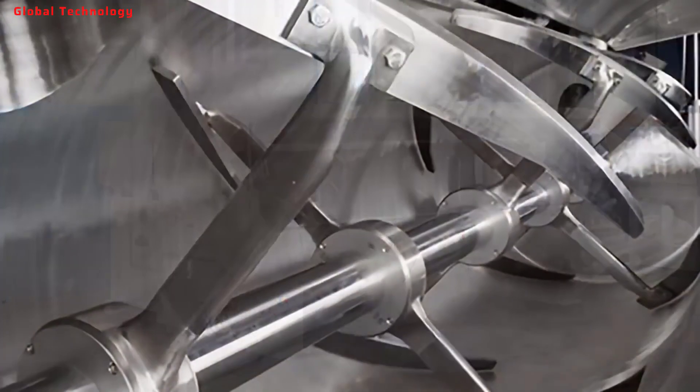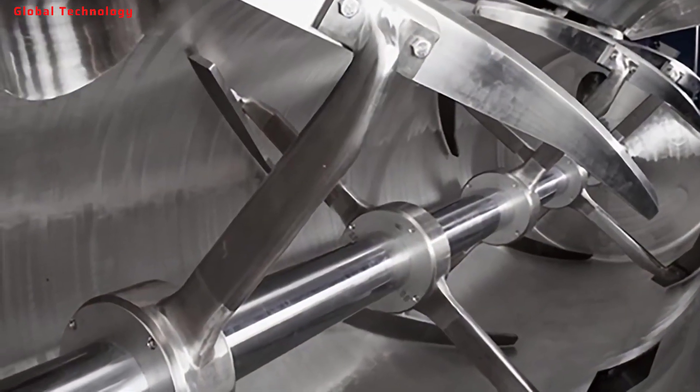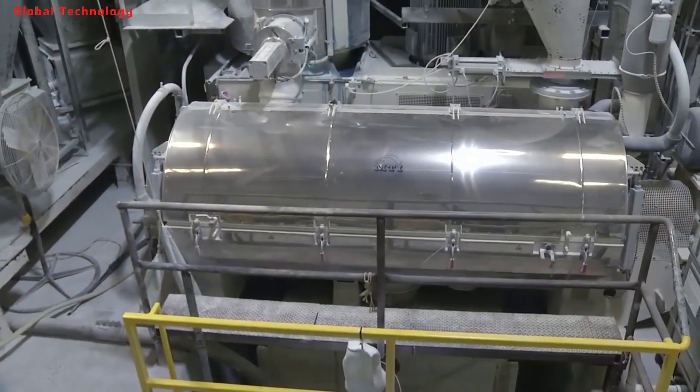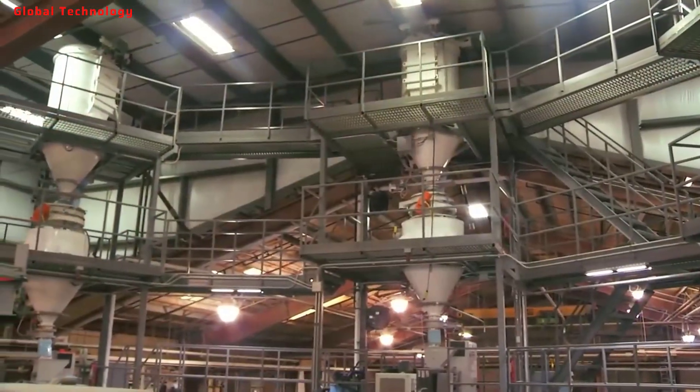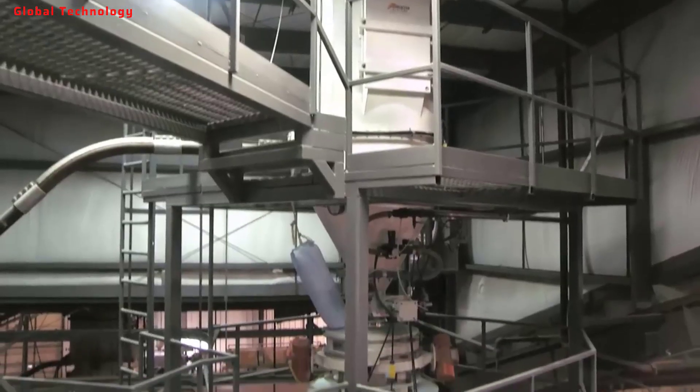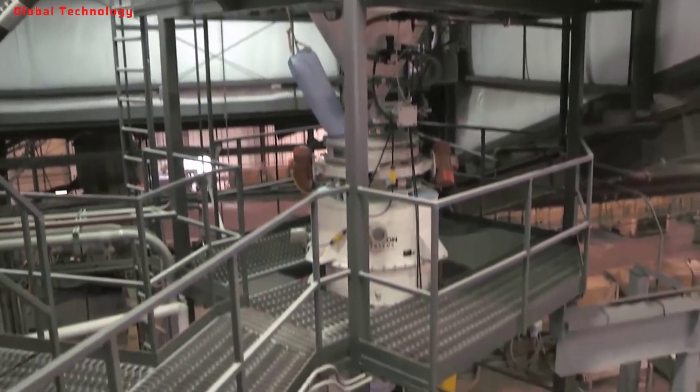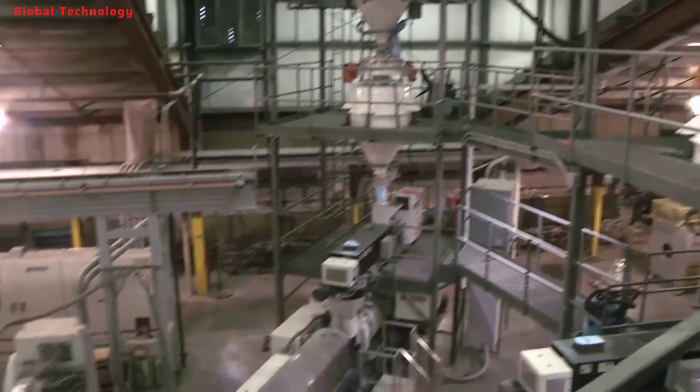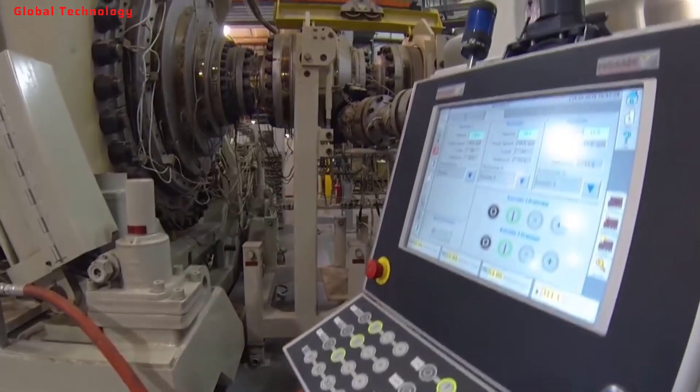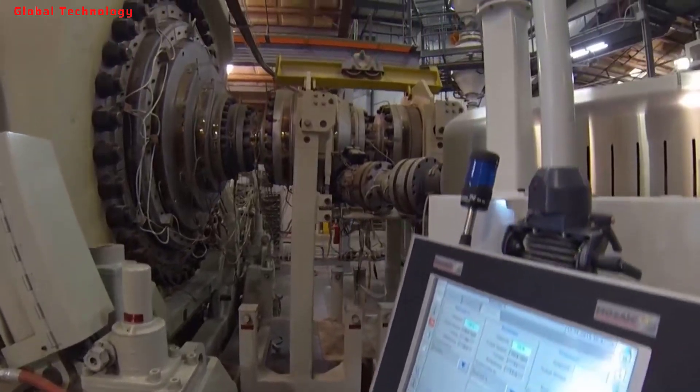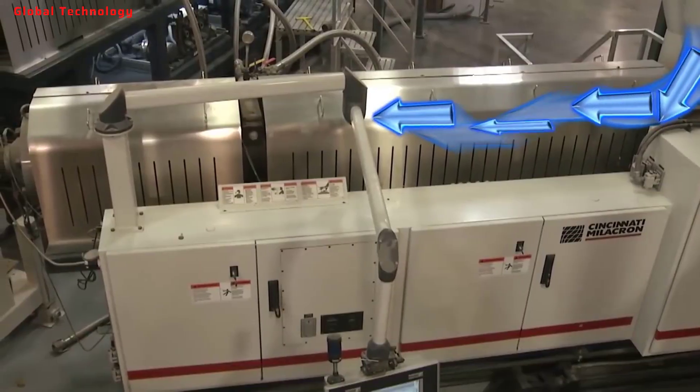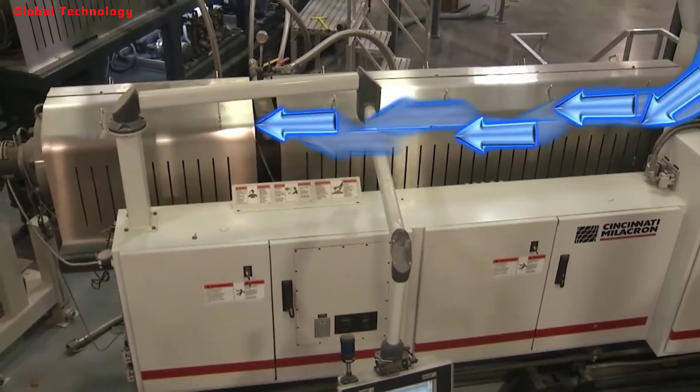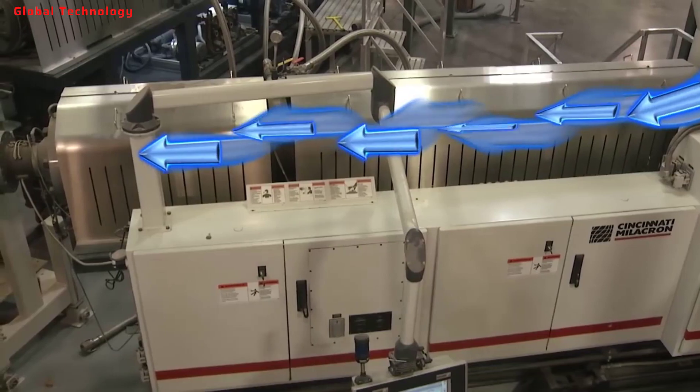PVC pipes are manufactured by extrusion of raw material PVC and generally follow the same steps of typical pipe extrusion operations. Feeding of raw material pellets or powder into the PVC twin screw extruder.